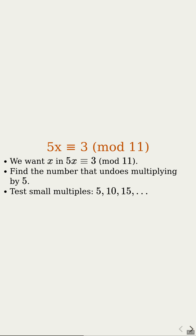Let me try. 5 times 9 is 45, and 45 is 1 more than 44, which is a multiple of 11. So 9 works. Exactly — 9 is the inverse of 5 modulo 11.